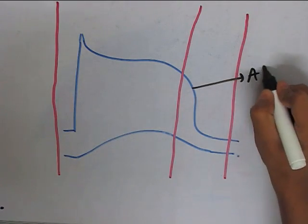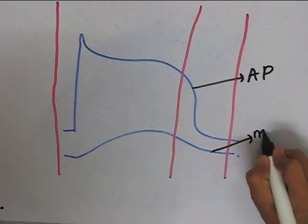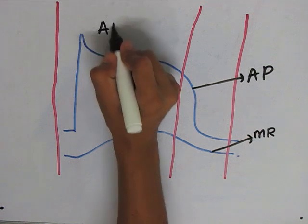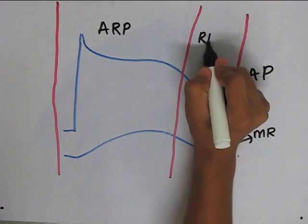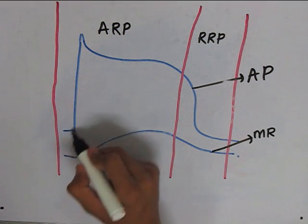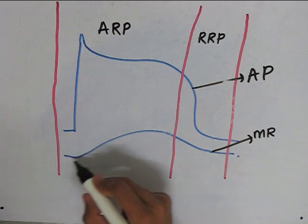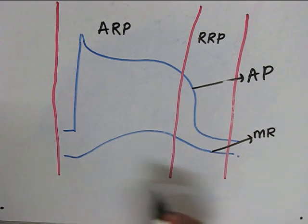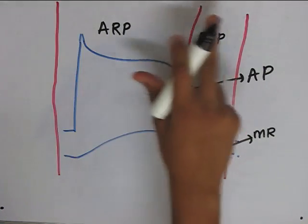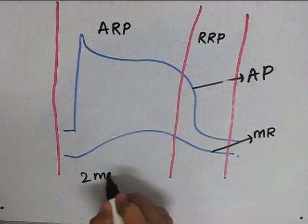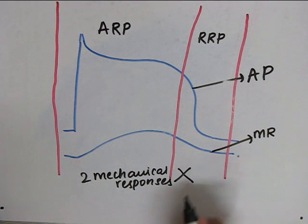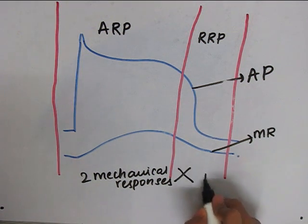If this is the action potential of a cardiac muscle and this is the mechanical response which the action potential produces, we can see the absolute refractory period and the relative refractory period. The duration of the action potential of a cardiac muscle is almost similar to the mechanical response produced by the action potential. So the mechanical response almost falls within the refractory period, meaning two mechanical responses cannot be merged, and therefore the cardiac muscle cannot be tetanized.